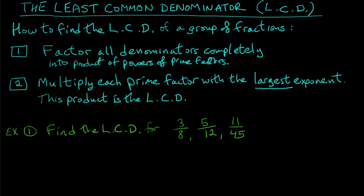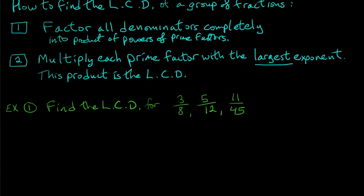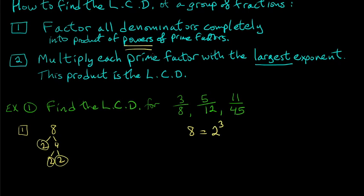For our first example, we want to find the least common denominator for three fractions: 3 over 8, 5 over 12, and 11 over 45. Step one: factor all the denominators. For 8, we get 2 times 2 times 2, which is 2 to the power 3. For 12, we have 2 squared times 3.